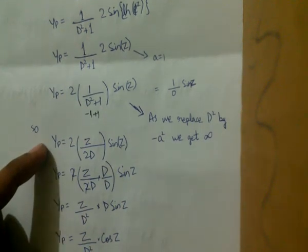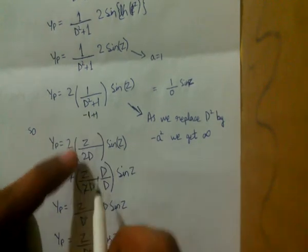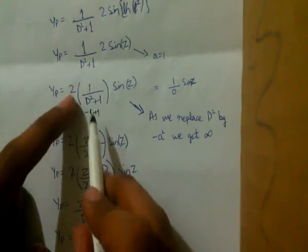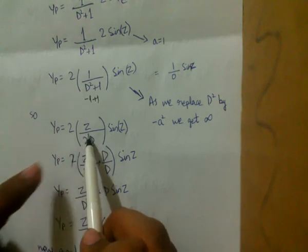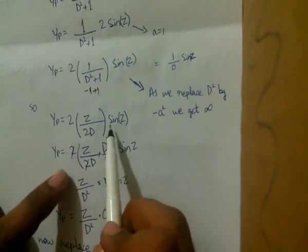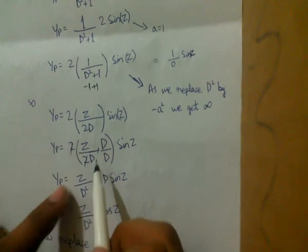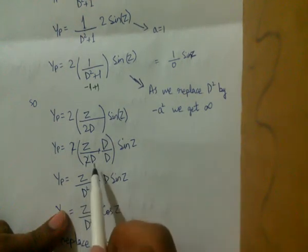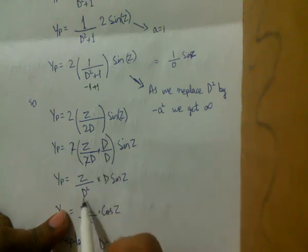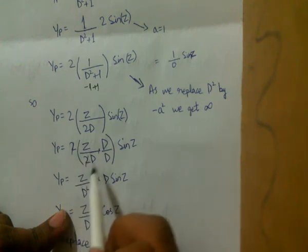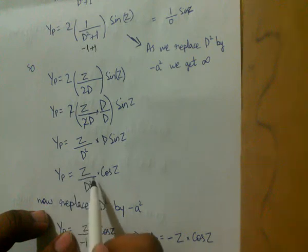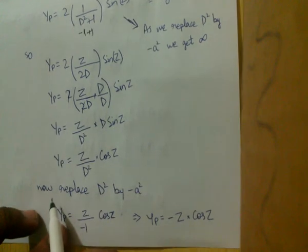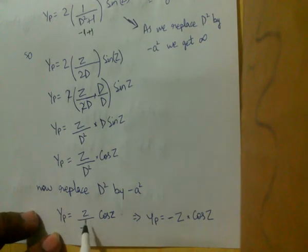To resolve this, we differentiate the denominator with respect to D (D² + 1 → 2D) and multiply the expression by z. The equation becomes 2·[z/(2D)]·sin z. Multiplying and dividing by D gives z·[1/D²]·(D·sin z). Since D(sin z) = cos z, we get yp = z·[1/(−1)]·cos z = −z·cos z.